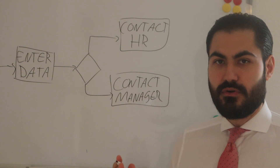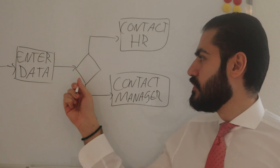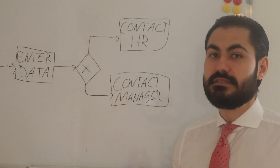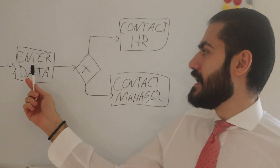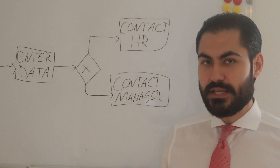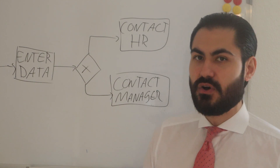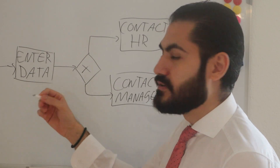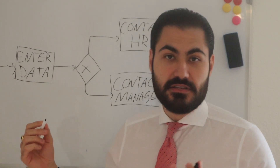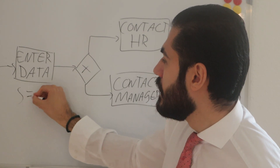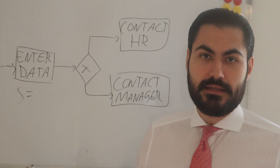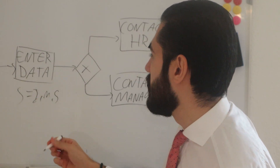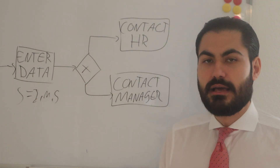Let's look at the either-or gateway first. You can model it as a plain diamond shape, or you can put an X in the middle — that's the either-or. We're entering some data and at this gateway we model a decision. Let's say there's a variable called seniority, with possible values: junior, mid, and senior — so J, M, or S.